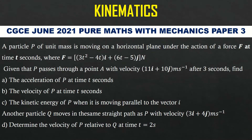As you can see, the question is being displayed to you. The question reads: a particle P of unit mass is moving in a horizontal field under the action of a force F at time T seconds, where F is equal to (2T² − 4T) in the i-direction plus (6T − 5) in the j-direction newtons. Given that P passes through a point A with velocity 11i + 10j meters per second after 3 seconds.